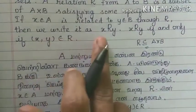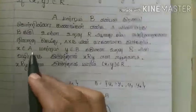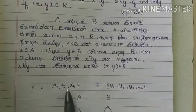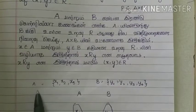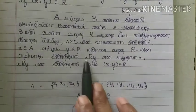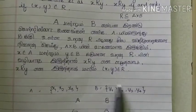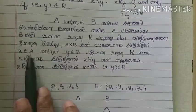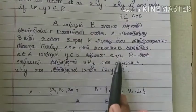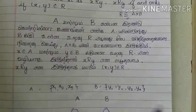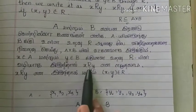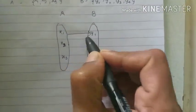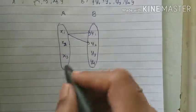If x belongs to A is related to y belongs to B through R, then we write it as x R y. If x belongs to A, then x is x1, x2, x3. If y belongs to B, then B is y1, y2, y3, y4. The form of A is related to R. So we write x relation y.